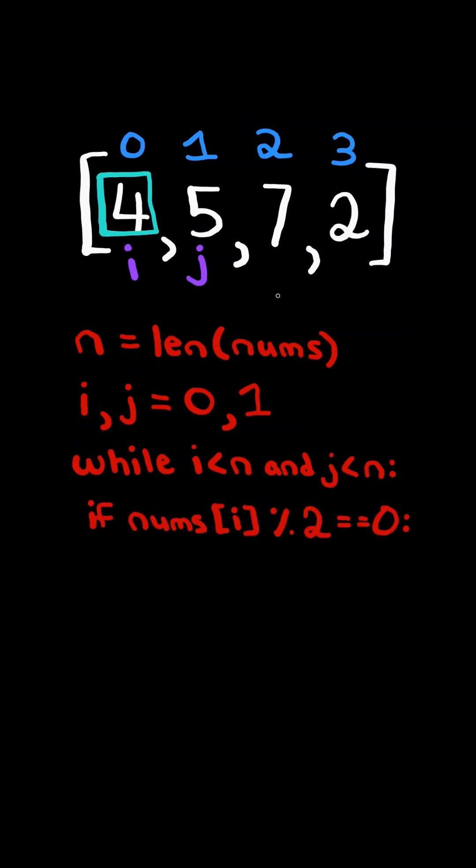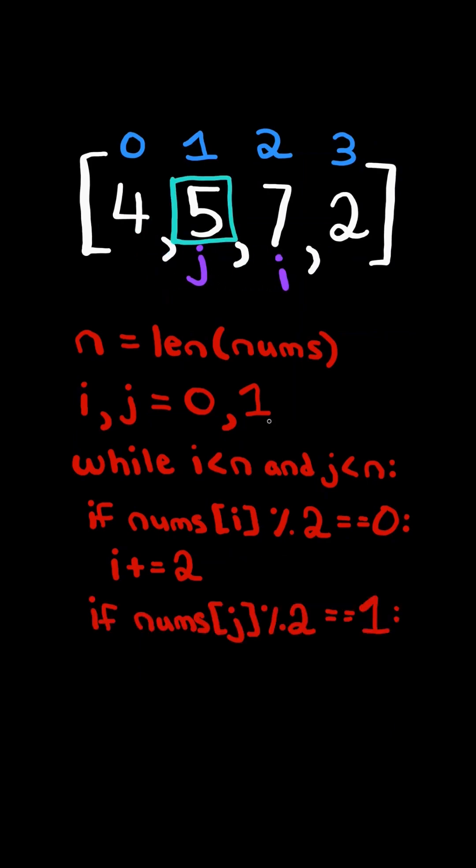If the number at the even pointer is already even, the condition is already satisfied, so we advance the even pointer by 2. Now if the value at the odd pointer is already odd, then the condition is already satisfied, so we advance the odd pointer by 2.